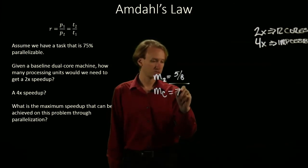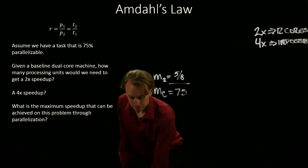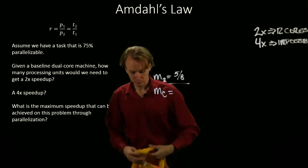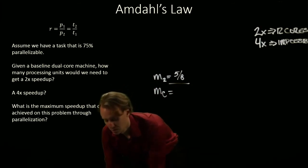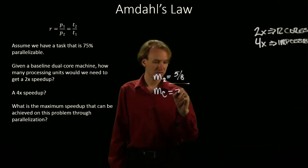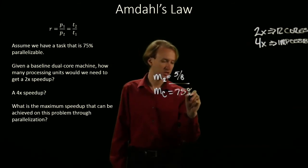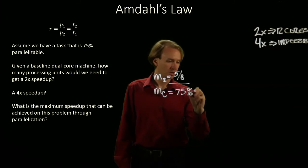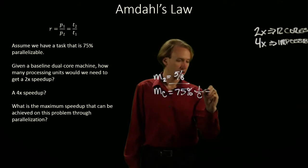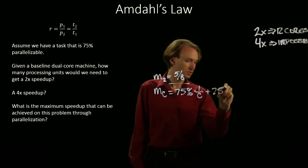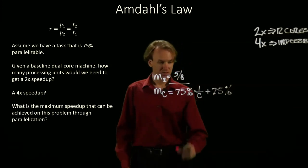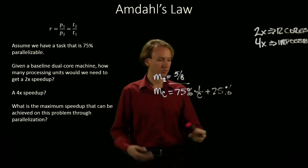And we'll have some machine C that still requires, that's still doing 75% of the computation as parallelizable. And it's going to run on some arbitrary number of cores. And we'll have some portion of this code that's non-parallelizable. This time, though, we're going to let the number of cores go to infinity.